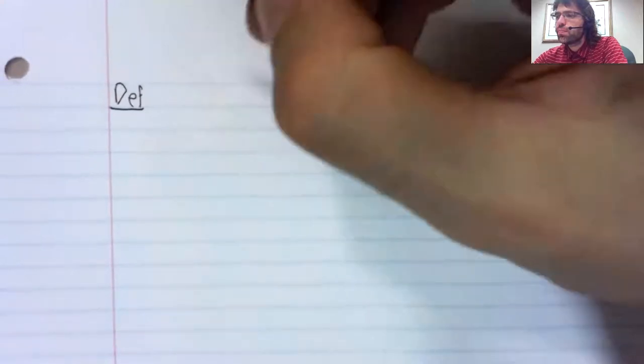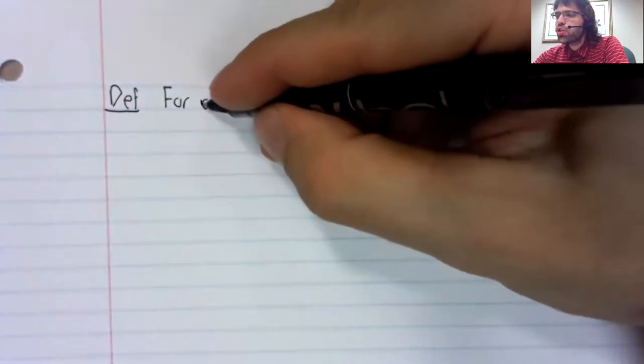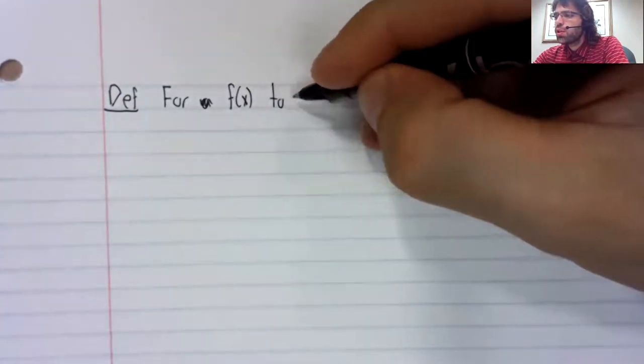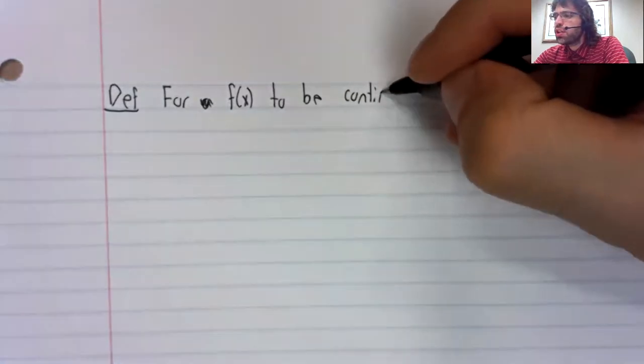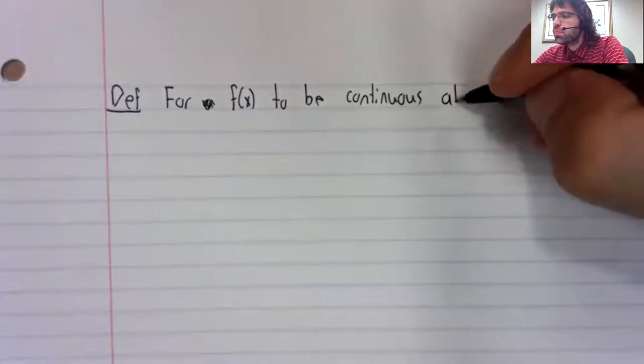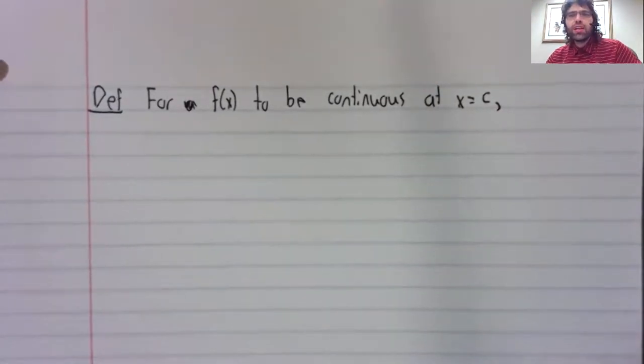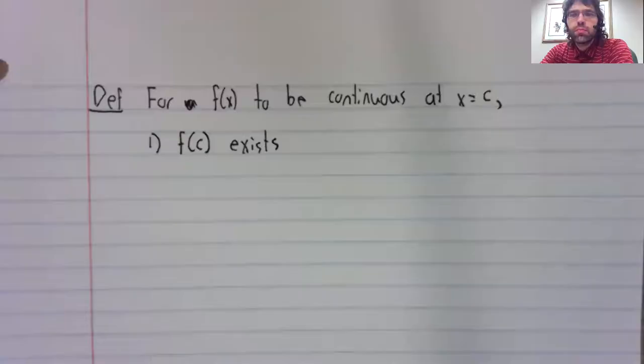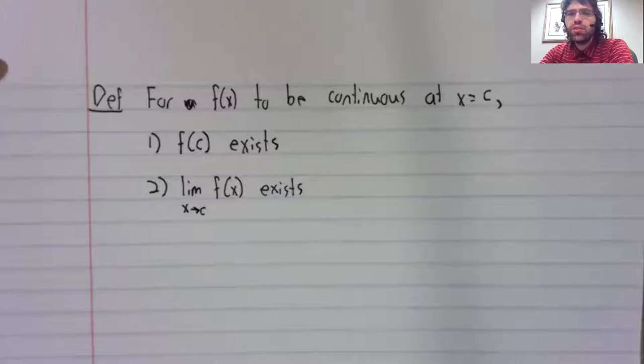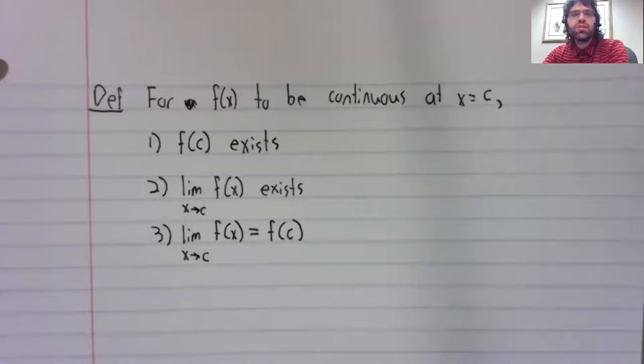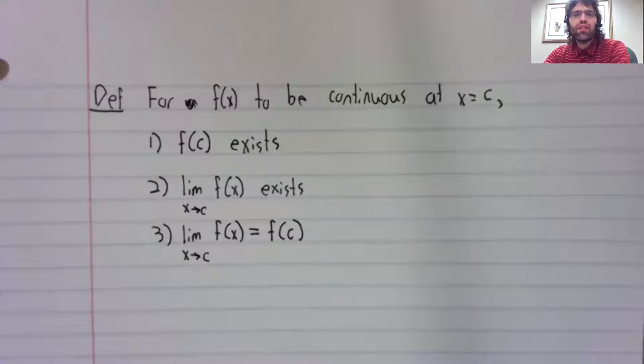Definition. For a function to be continuous at some value C, three things must occur. The function has to be defined at C. The limit as x approaches C of the function has to exist. And finally, the limit as x approaches C of f of x has to equal f of C.